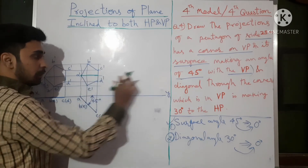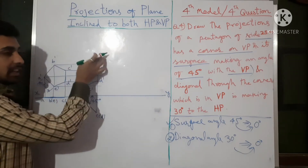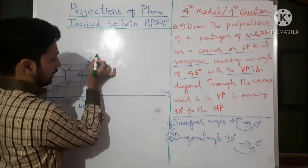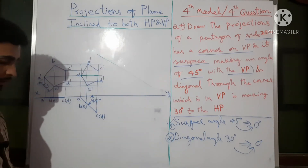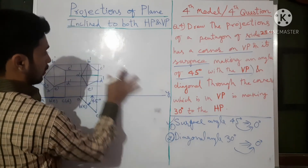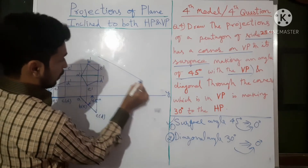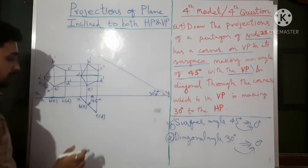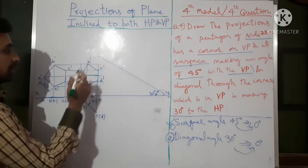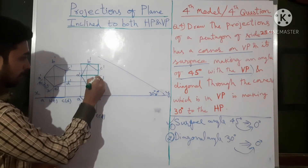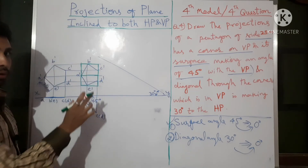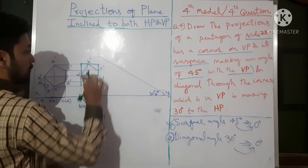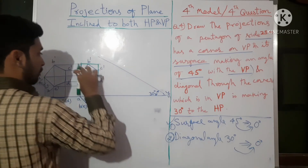For the third step, the diagonal through A — because A is in VP — should be at 30 degrees. You can take 30 degrees in either direction; I will take it like this. Now enclose the figure in a box. In the exam, do not highlight the box or draw the diagonal — this is just for explanation purposes. Measure the length of the box and transfer it to the new position.